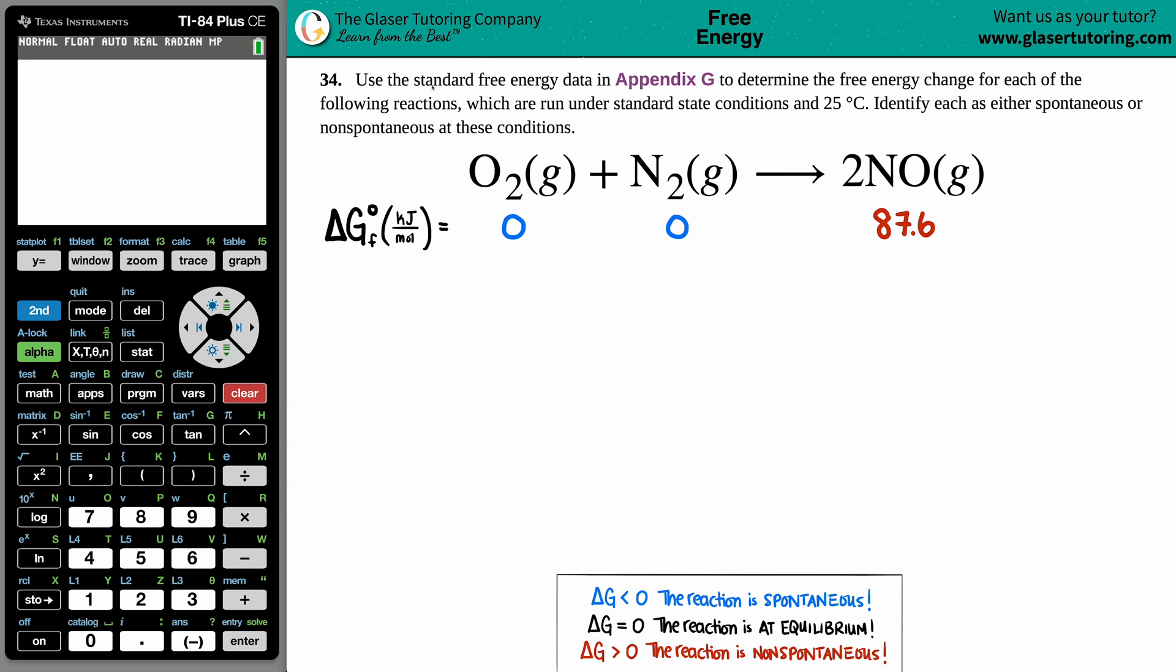Number 34. Use the standard free energy data in Appendix G to determine the free energy change for each of the following reactions, which are run under standard state conditions and 25 degrees Celsius, and then identify each as either spontaneous or non-spontaneous at these conditions.